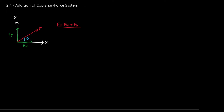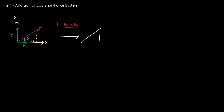We can form a right triangle by drawing a vertical dotted line. This gives us a right triangle where the hypotenuse is F — the magnitude of the force, which is also the length of the vector — and the bottom length is simply Fx. Knowing that angle theta is involved, we can use trigonometry to find Fx.